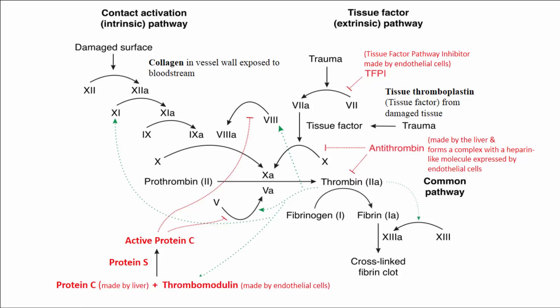Here is a summary of the inhibition of clotting factors by the naturally occurring anticoagulants, shown in red, including antithrombin, activated protein C, and tissue factor pathway inhibitor, or TFPI. Please pause the video for review.